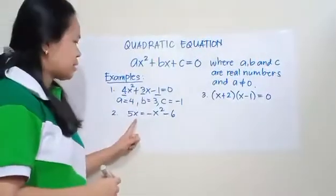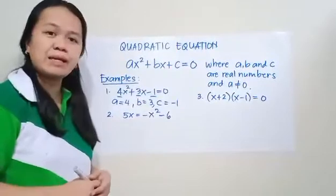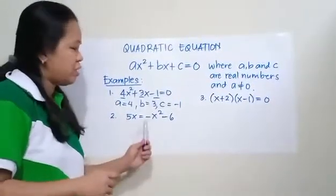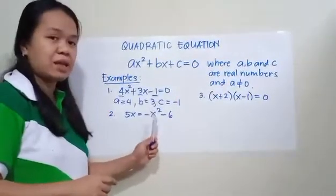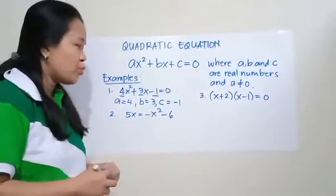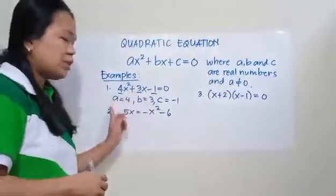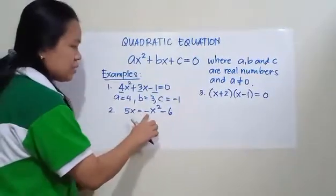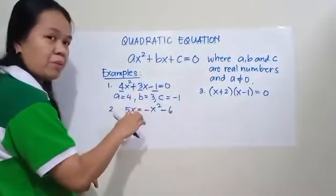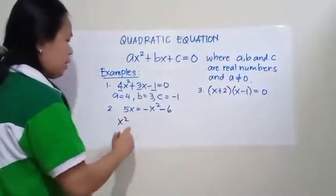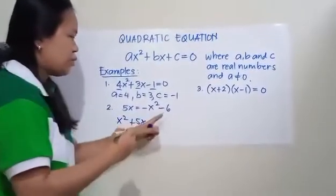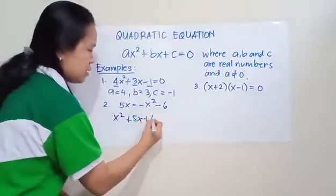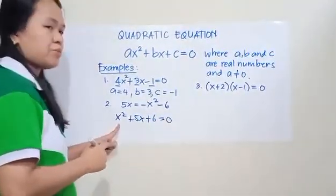Number 2: 5X equals negative X squared minus 6. Is this an example of a quadratic equation? The answer is yes, because the highest power of the variable is 2. However, this one is not in standard form, so we have to write this in standard form. We have to move all these terms to the other side, getting the additive inverse of each term. The additive inverse of negative X squared becomes positive X squared plus 5X, and the additive inverse of negative 6 becomes positive 6, so the result is X squared plus 5X plus 6 equals 0. This is the standard form of a quadratic equation.